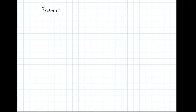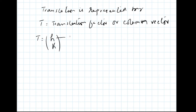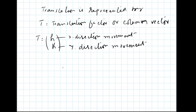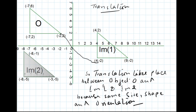Translation is represented by T normally, and this is called the translation factor, or column vector. It is represented by H and K, where H is the movement in the x direction and K is the movement in the y direction. It can also be expressed as the formula: image equals object plus translation factor, or column vector.